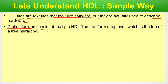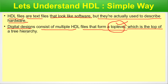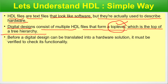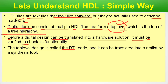Digital designs consist of multiple HDL files that form a top level. The top-down approach in VLSI starts at the top of the file hierarchy — generally you'll find a top.v or top.vhdl as the top module. Before a digital design can be translated into a hardware solution, it must be verified. The top-level design is called the RTL code, and it can be translated into a netlist by a synthesis tool.